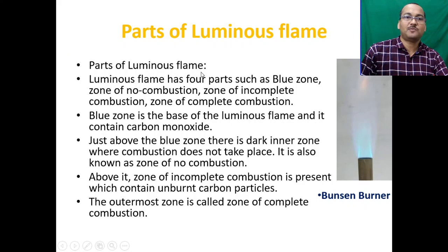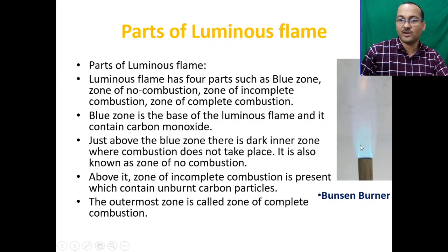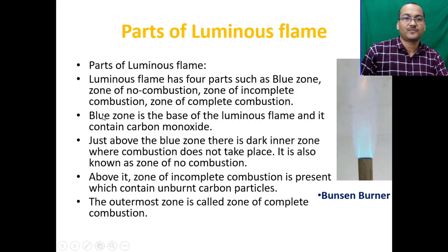The luminous flame has four parts: the blue zone, zone of no combustion, zone of incomplete combustion, and zone of complete combustion. You can see the blue zone just above the burner tube, and the outermost zone is the zone of complete combustion. Inside, between the blue zone and outermost zone, there are two zones: zone of no combustion and zone of incomplete combustion. The blue zone is the base of the luminous flame and it contains carbon monoxide.